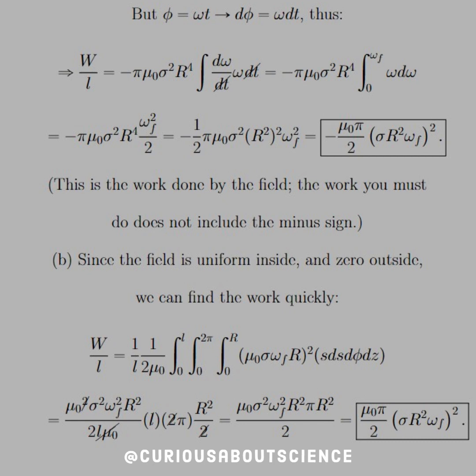All right, so for B, since the field is uniform inside and zero outside (the magnetic field that is), we can find the work quickly. Take the W divided by L, where W equals the energy from the B field, which is the integral of B squared over 2 mu naught d tau. Now, we know that d tau runs from 0 to L, 0 to 2 pi, 0 to R. We've seen this setup before. No big deal. Run it through.